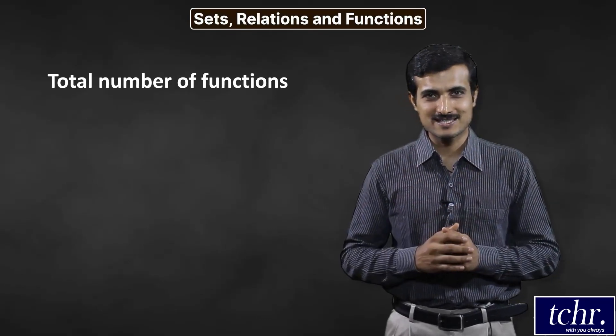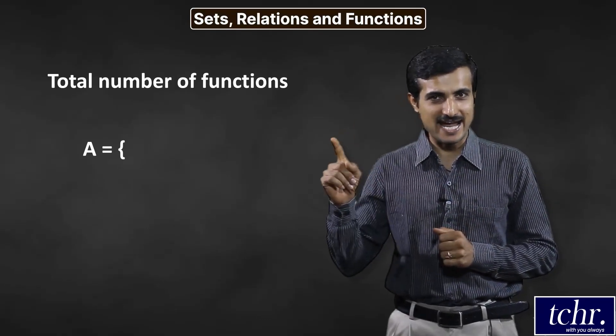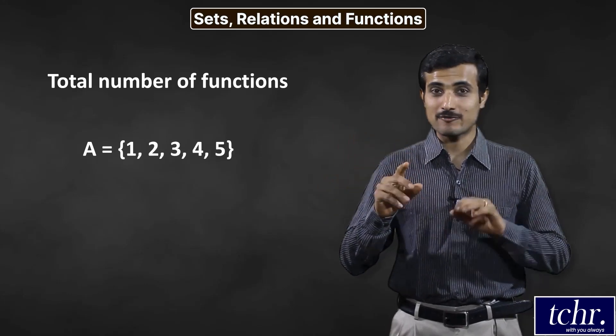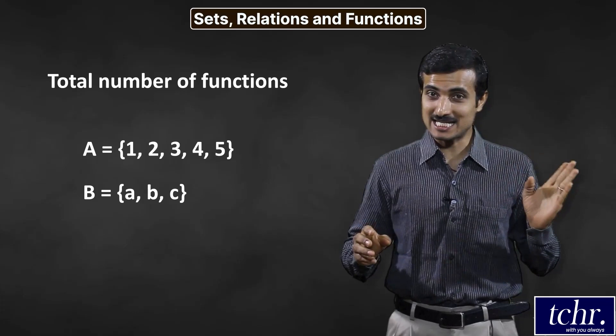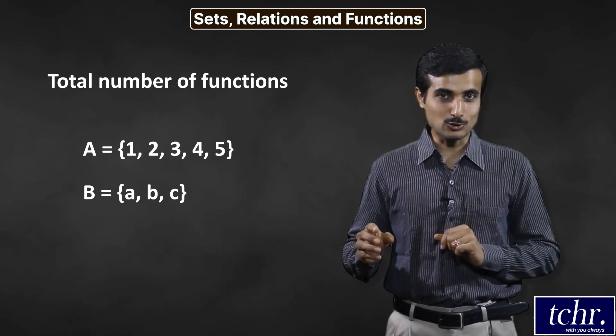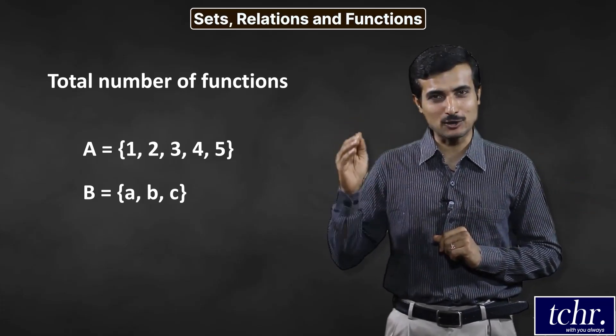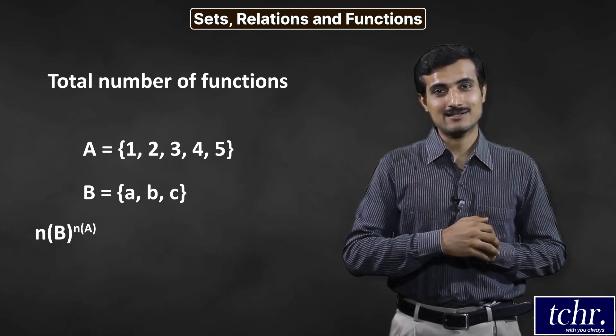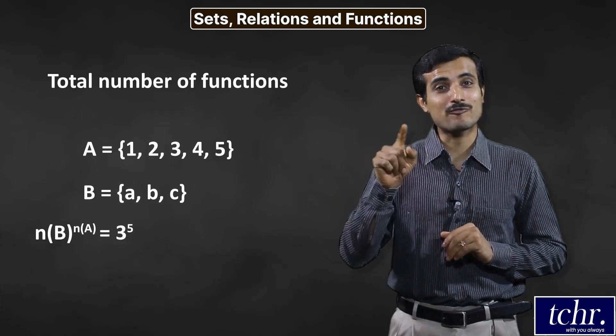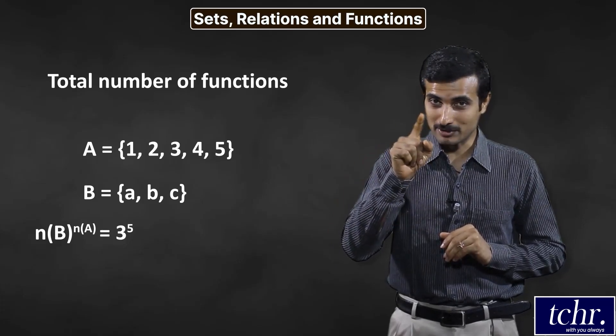Total number of functions. One-way set A: 1, 2, 3, 4, 5 - five elements here. Set B: a, b, c - three elements here. Then total number of functions from A to B equals n of B power n of A, which is 3 power 5. This is the total number of functions.